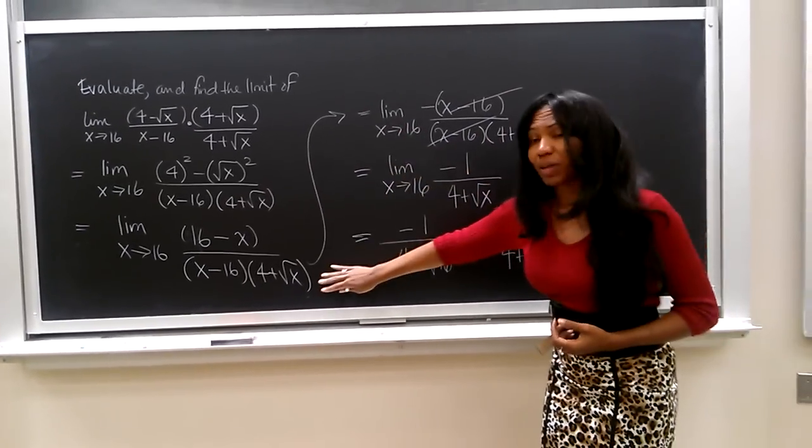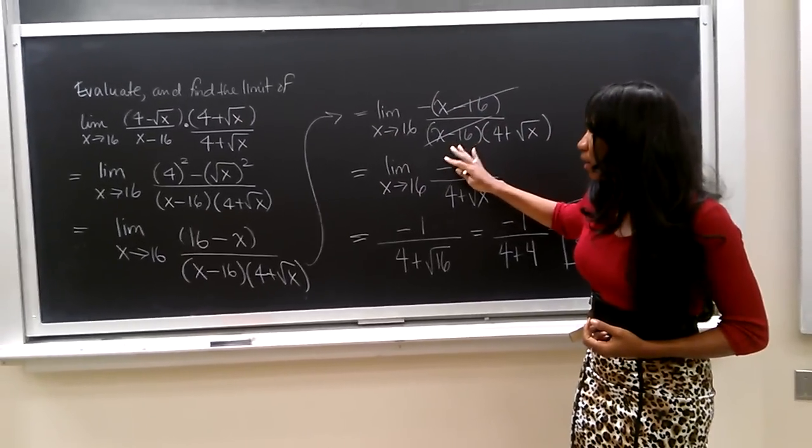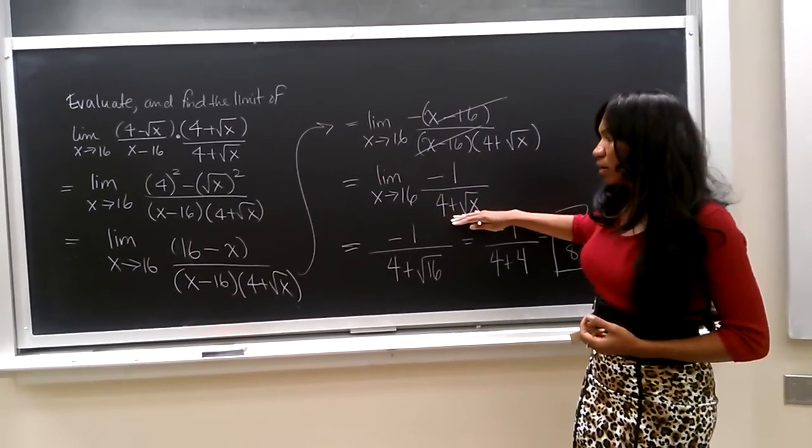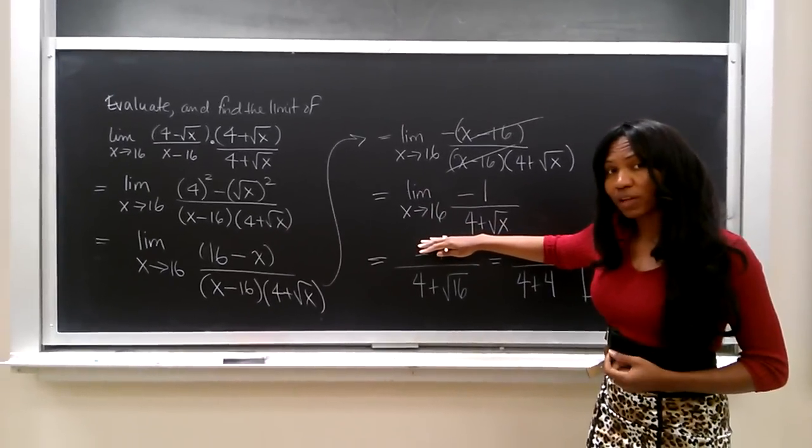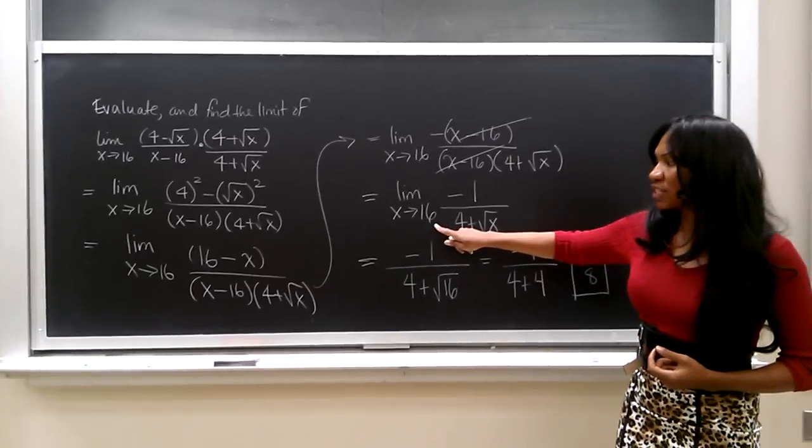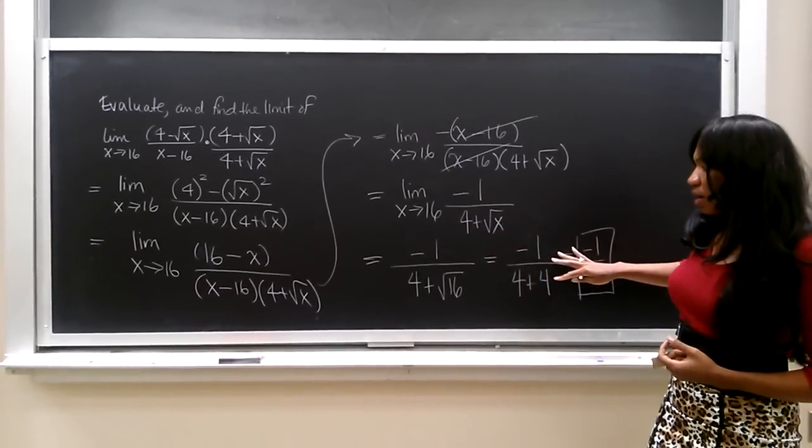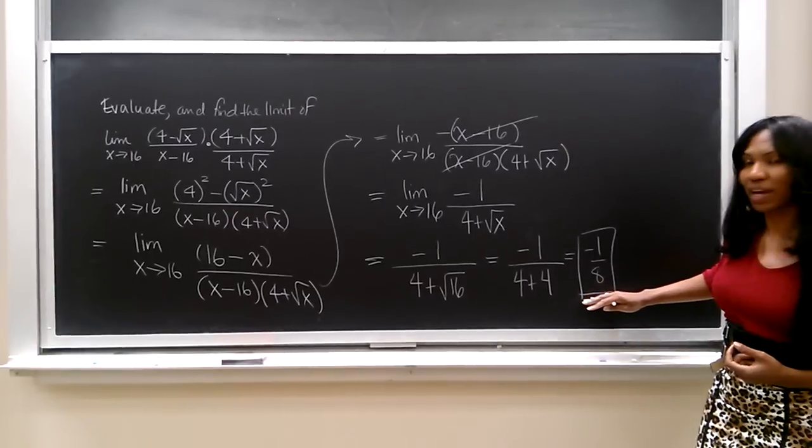We do not multiply the denominator, but instead we cancel out common quantities. We simplify, and then finally we're able to eliminate and remove the limit sign, and substitute our x value of 16 into the limit to give us our result, which is negative 1 over 8.